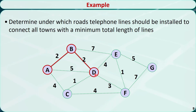Now let's repeat this step: find one unconnected node that is closest to A, B, and D. The direct neighbors are C, F, and E. The closest is node C — the distance from C to D is 1. Let's connect D and C.